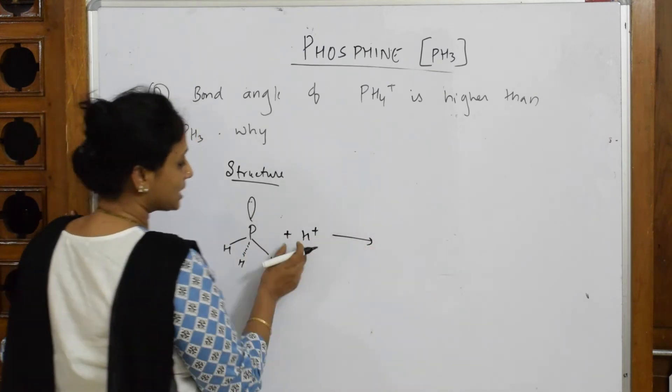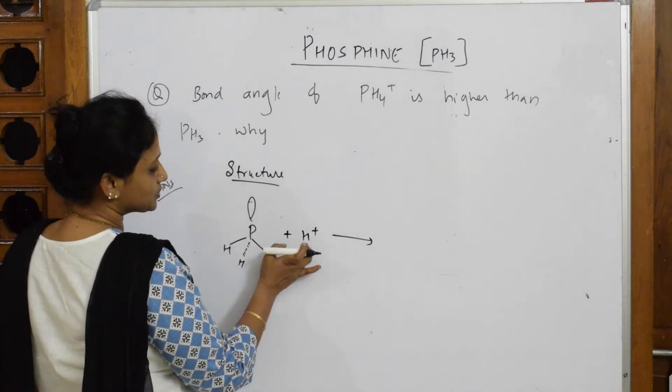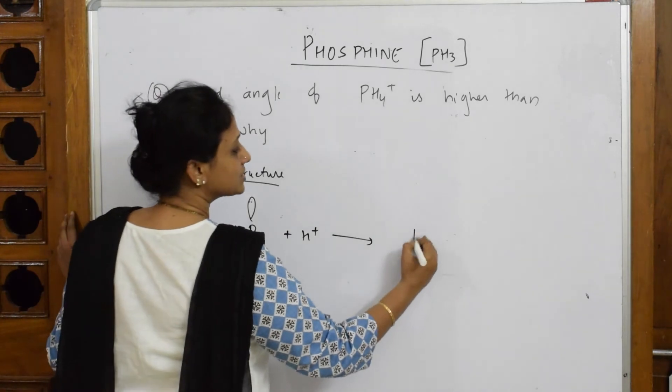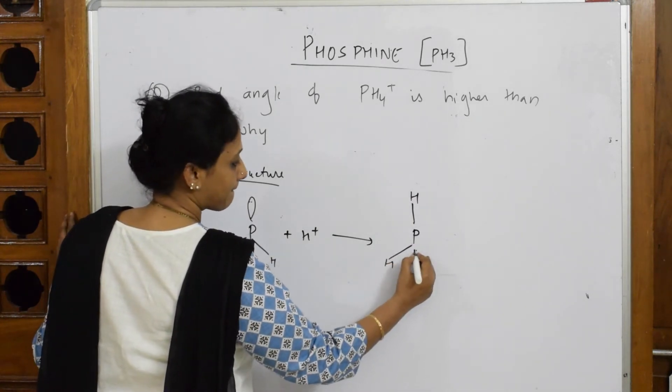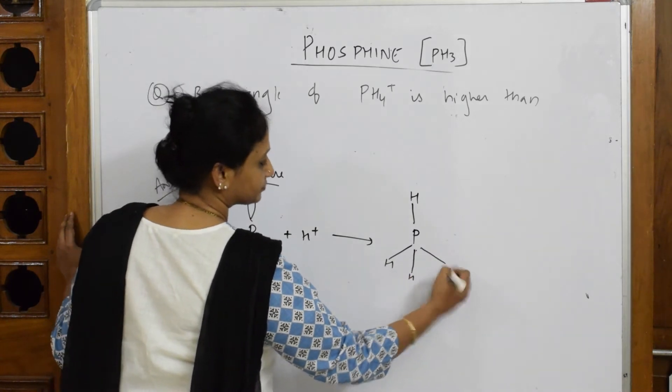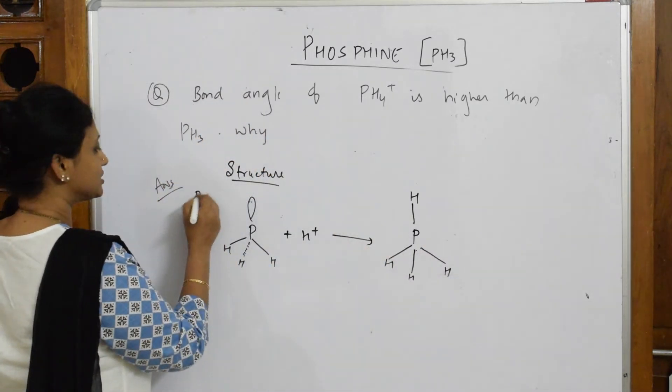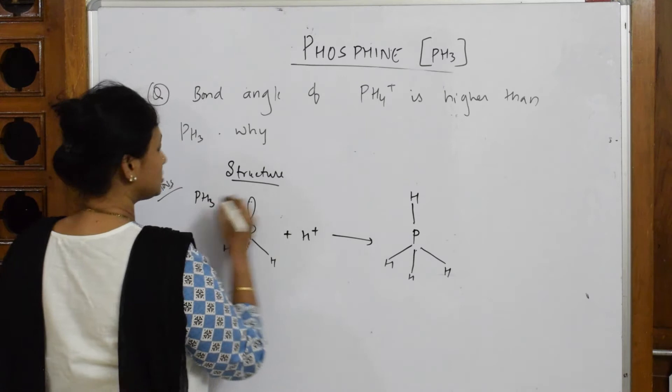When it donates, the H+ will accept this pair of electron and it gets converted into PH4+. So this is your PH3 and this is your PH4+.